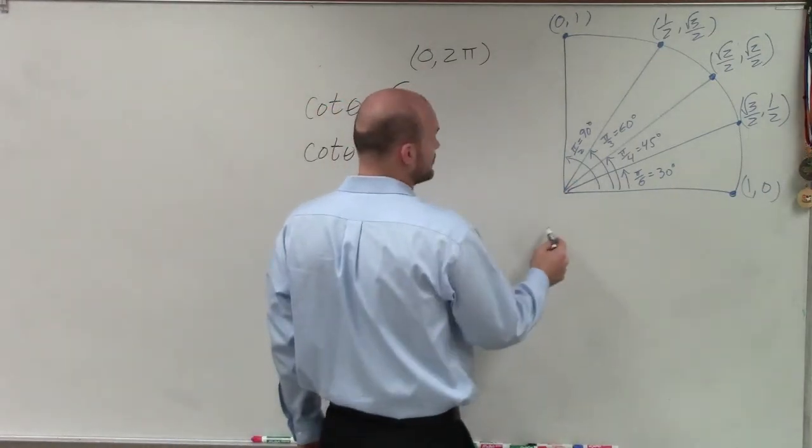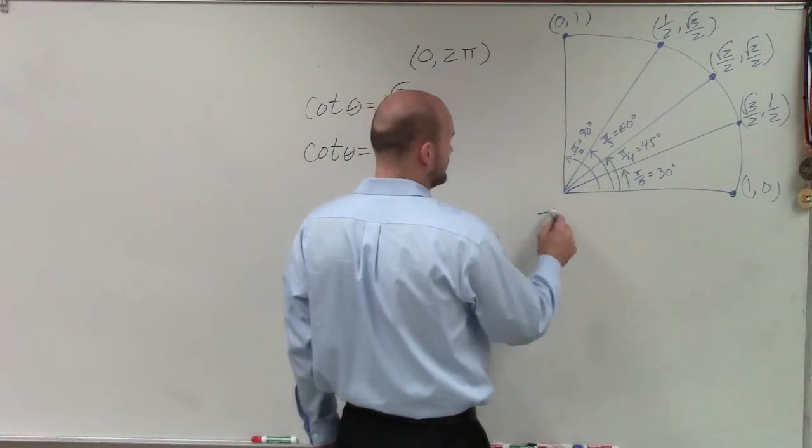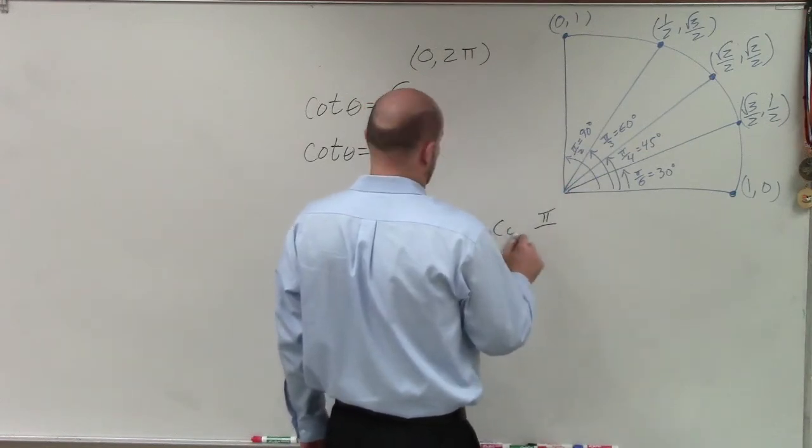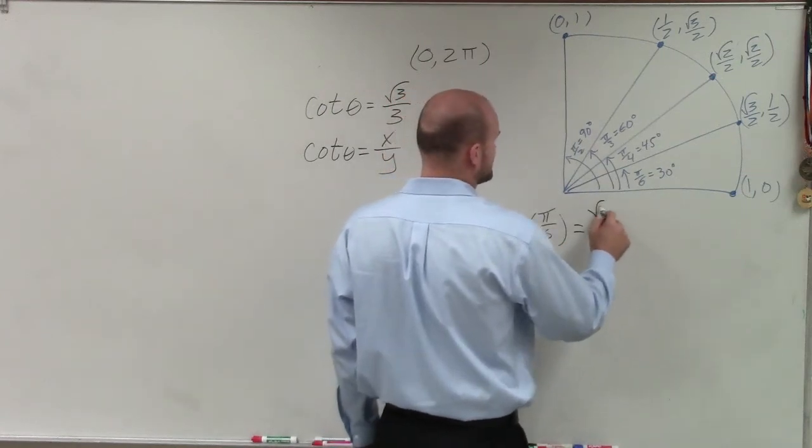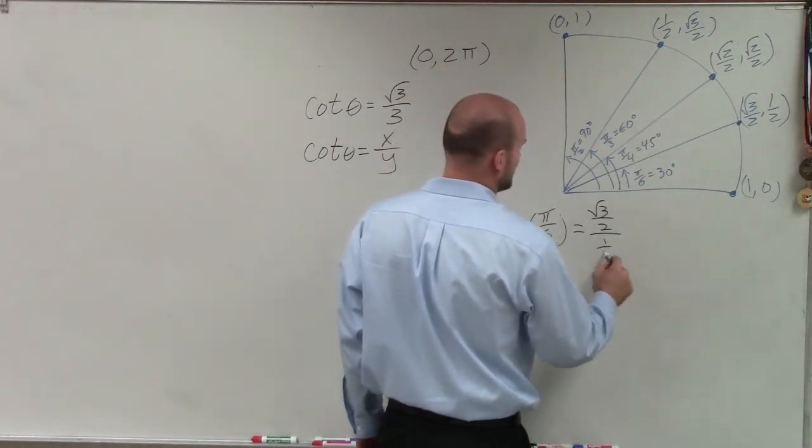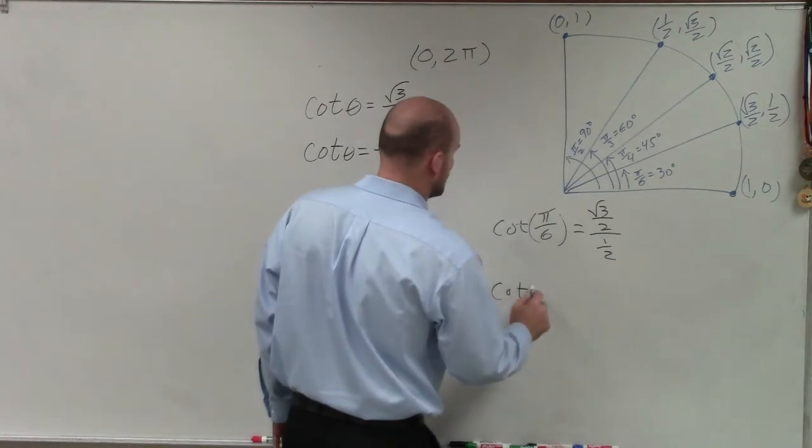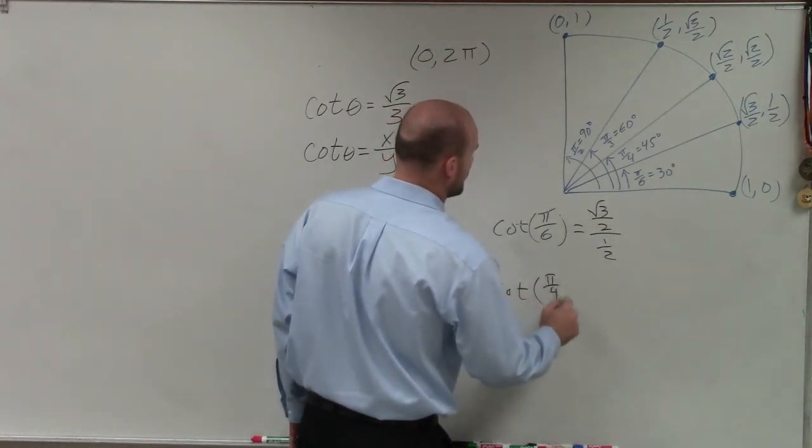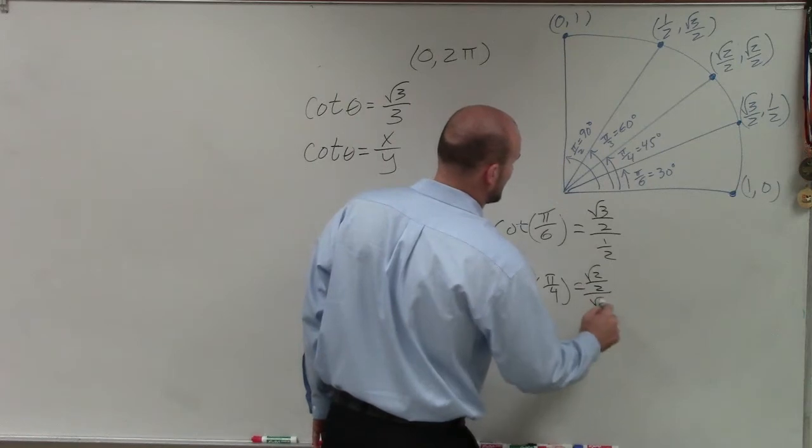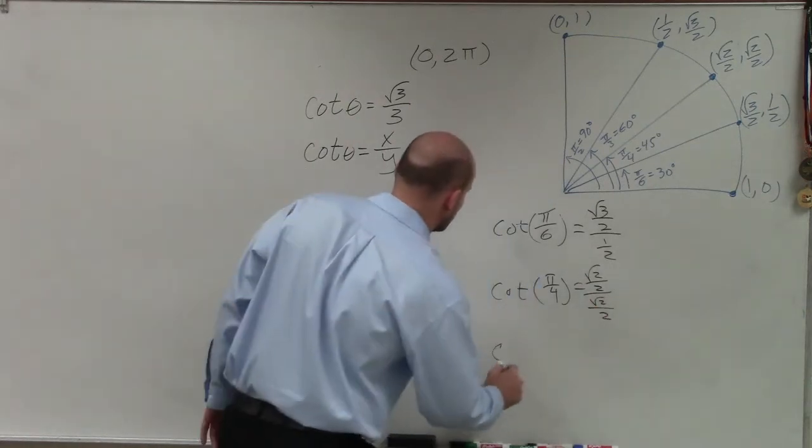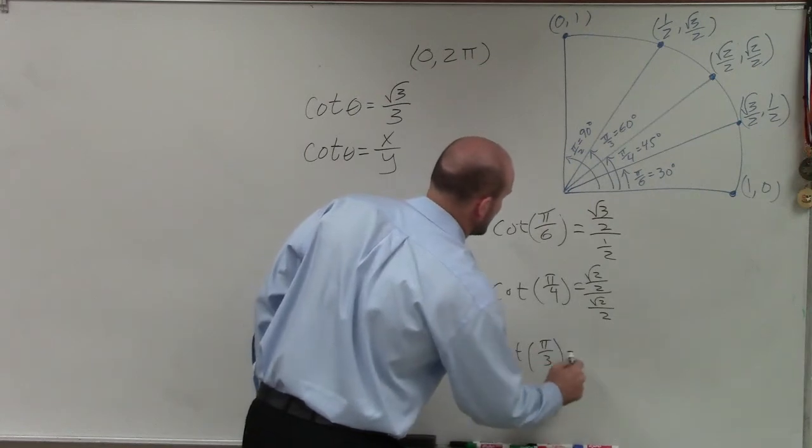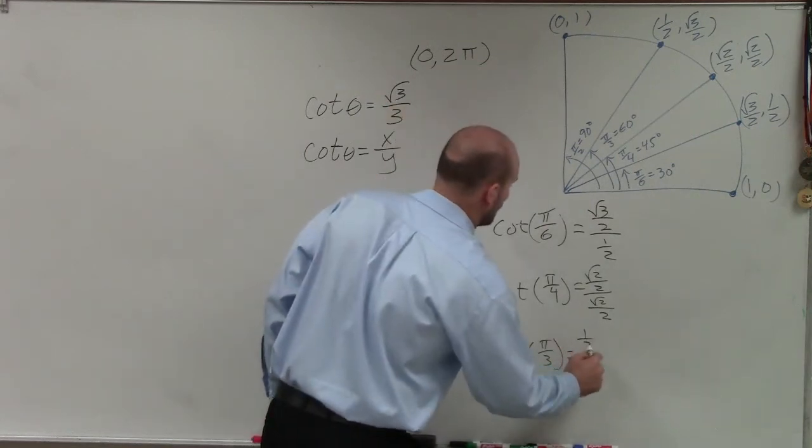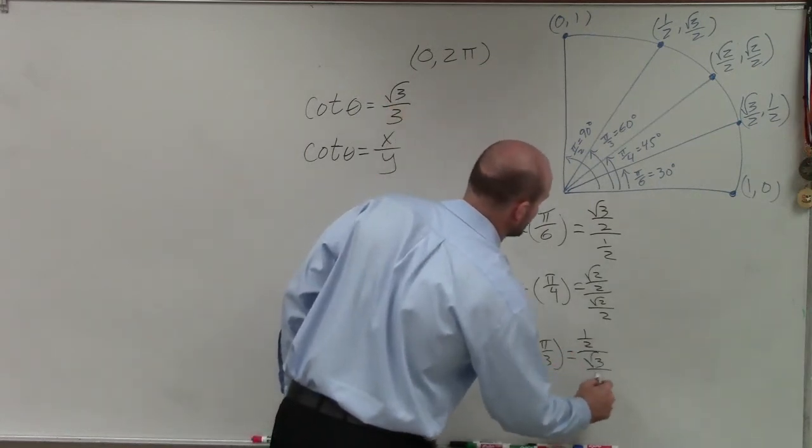But our angle could be a whole bunch of answers. So let's say if our angle was cotangent of pi over 6, that would be square root of 3 over 2 divided by 1 half. If I said it was cotangent of pi over 4, then that would be the square root of 2 over 2 divided by the square root of 2 over 2. And if we said it was the cotangent of pi over 3, then that would be 1 half divided by the square root of 3 over 2.